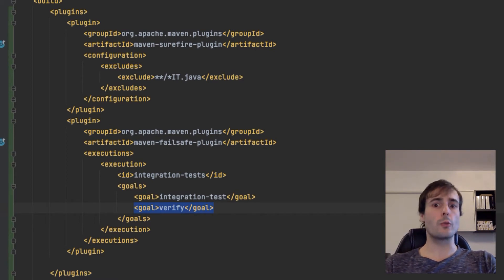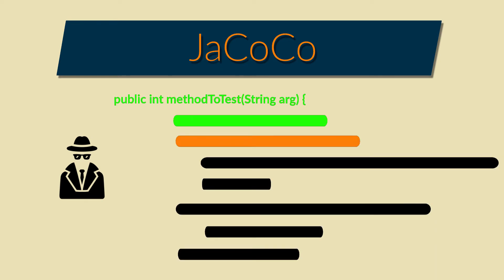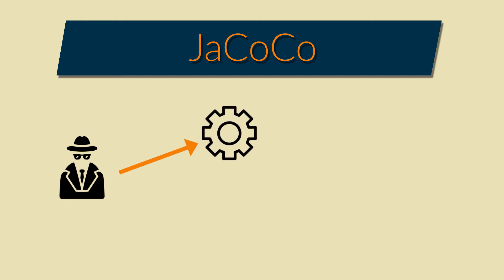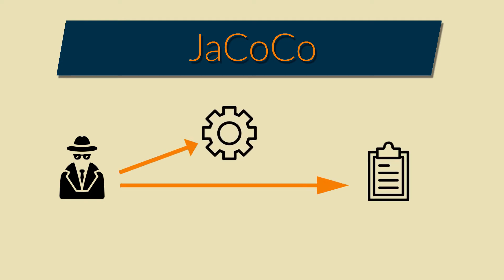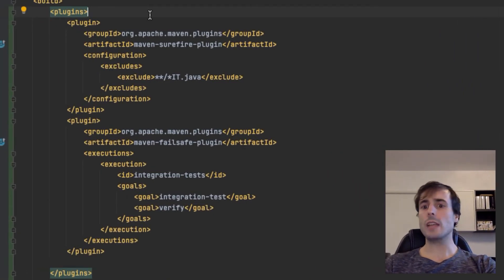Next step: JaCoCo, to generate the report about the coverage. But how does JaCoCo work? JaCoCo has an agent which will be connected while running the tests. This agent will inspect which lines of code are run, which branches, which methods, and which classes were executed during the tests. At the end, it will compare how many lines of code were run and how many were missed. What I must do is plug this agent before the tests start and generate a report when the test phase finishes — for both the unit and the integration test phases. So when running the Surefire and Failsafe plugins, I must add an agent and accept a new argument.